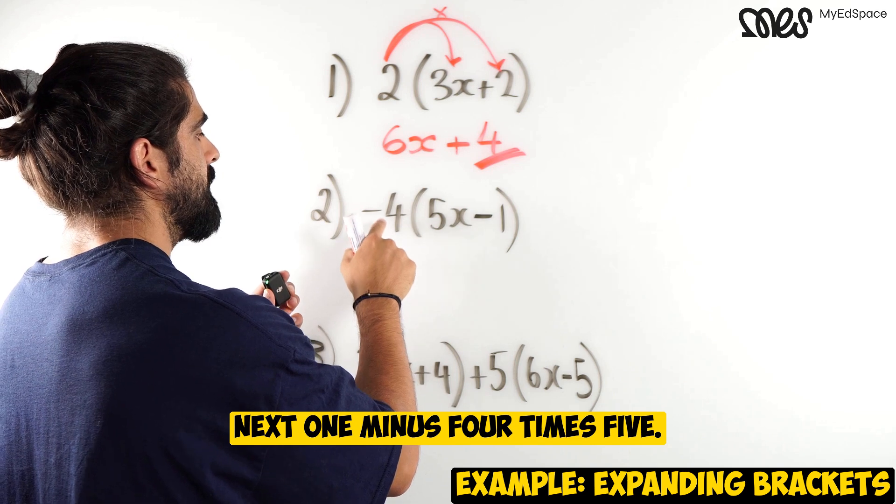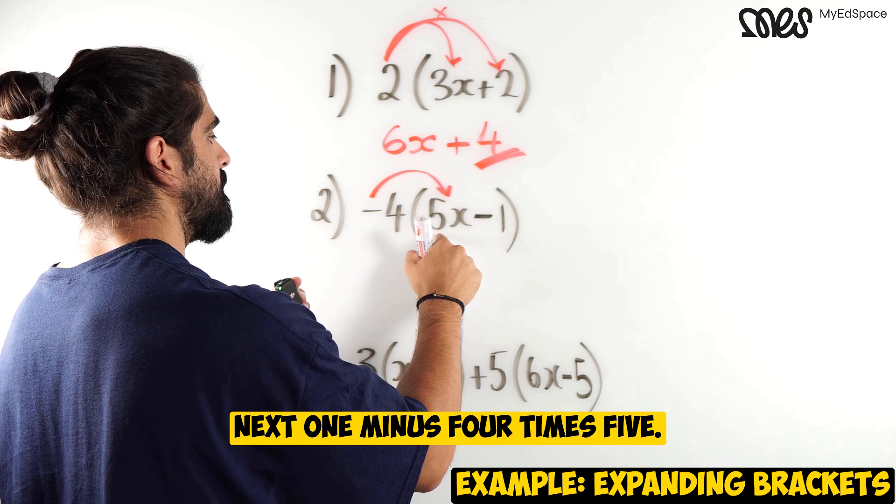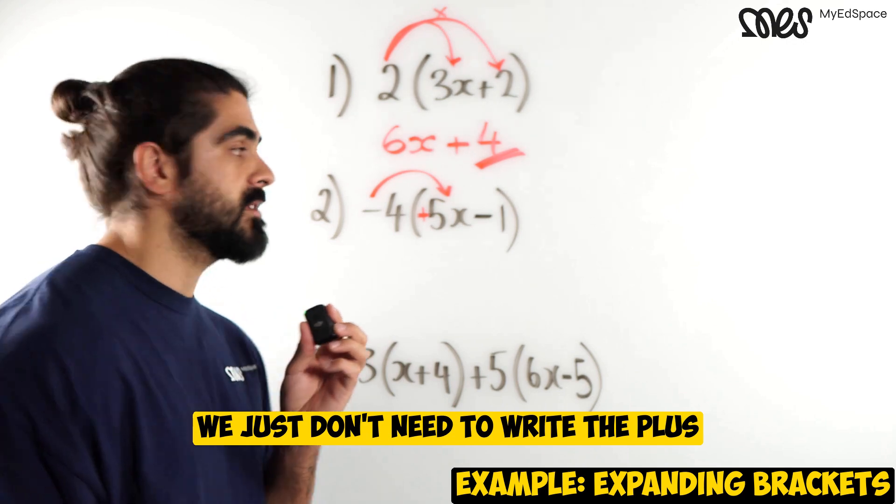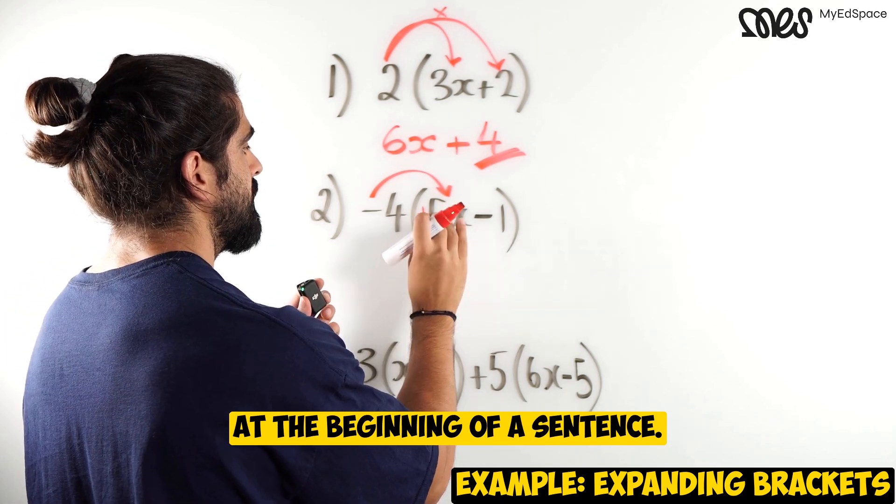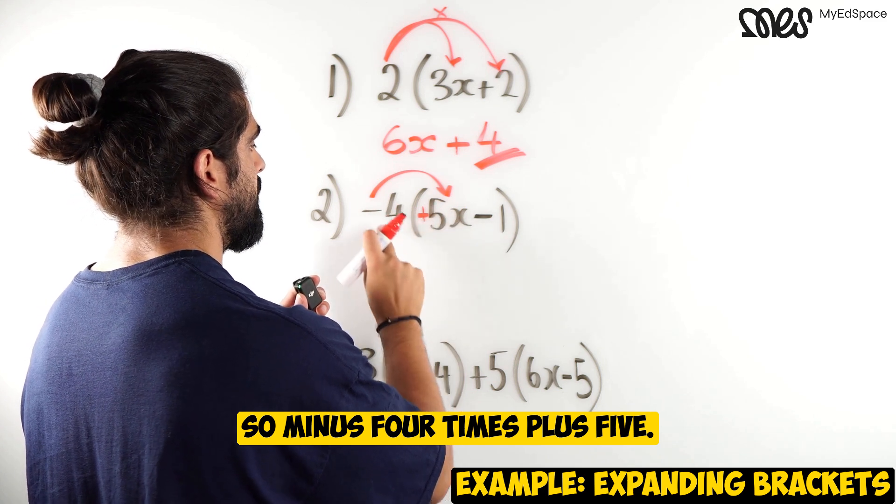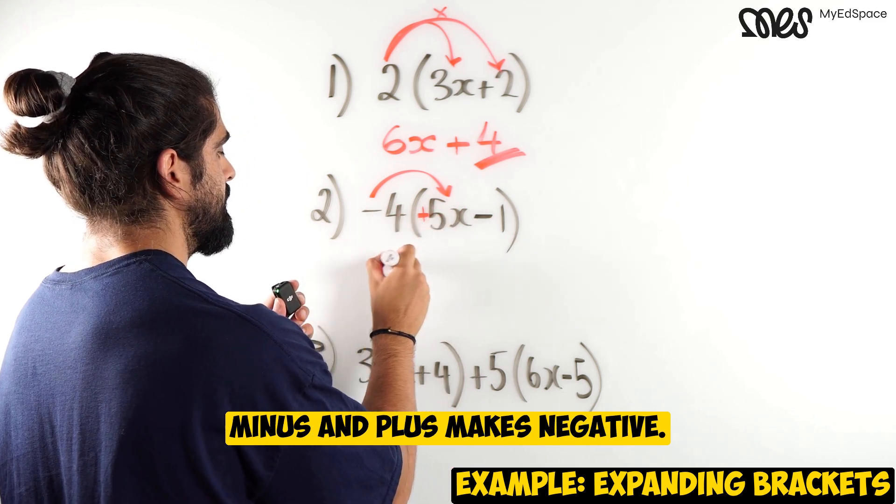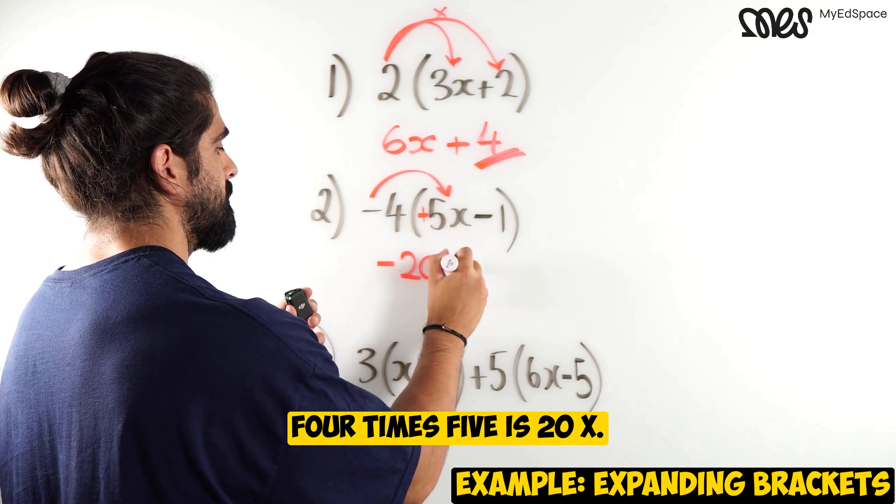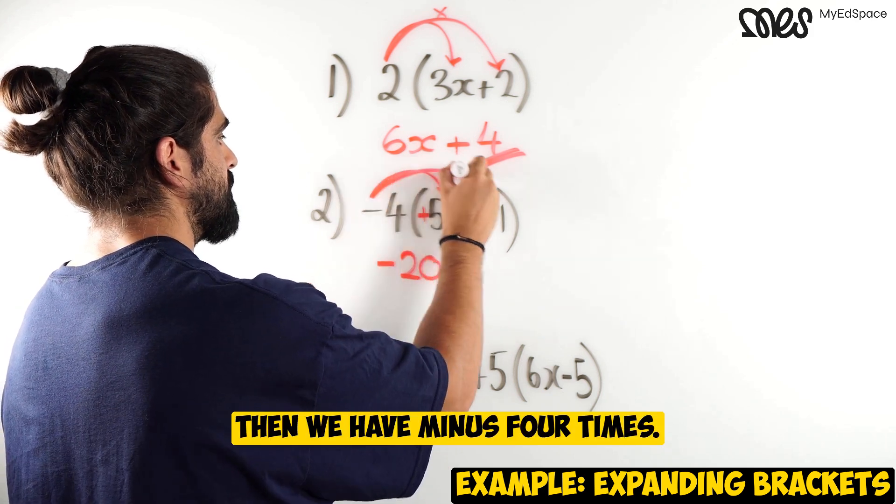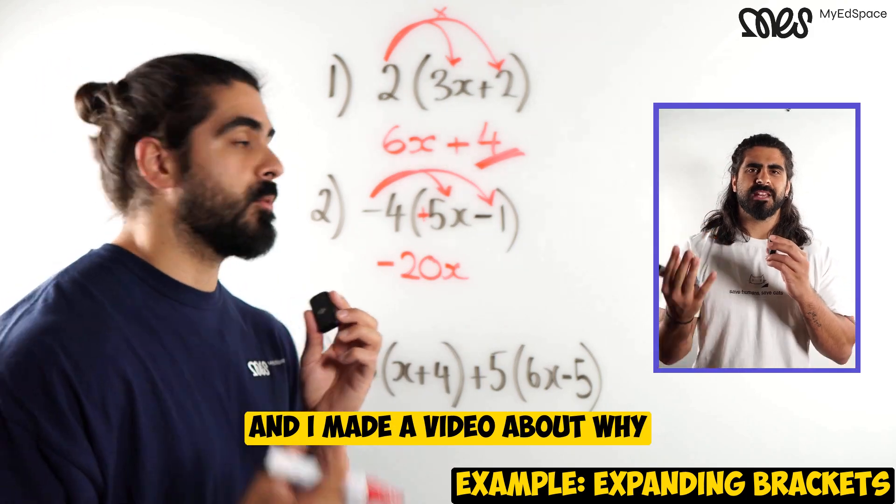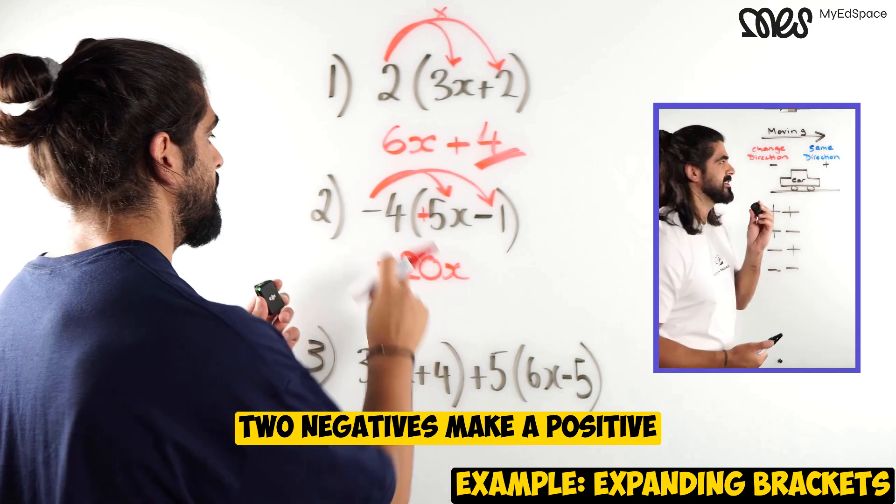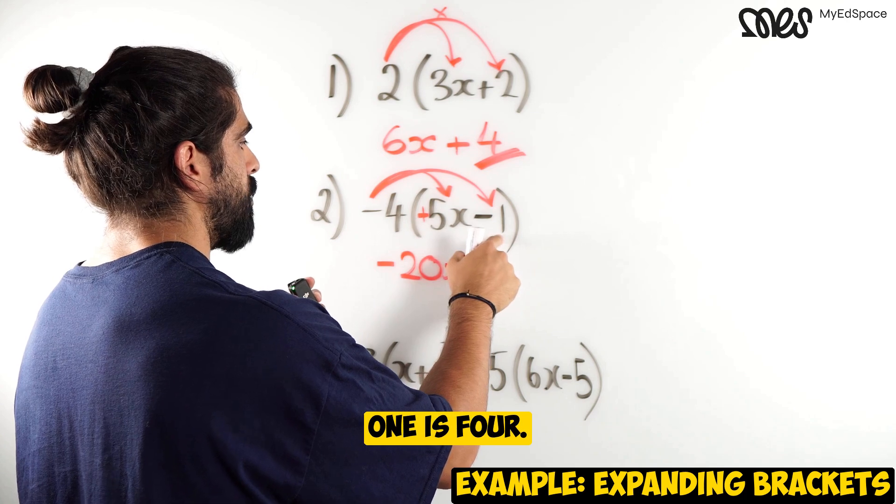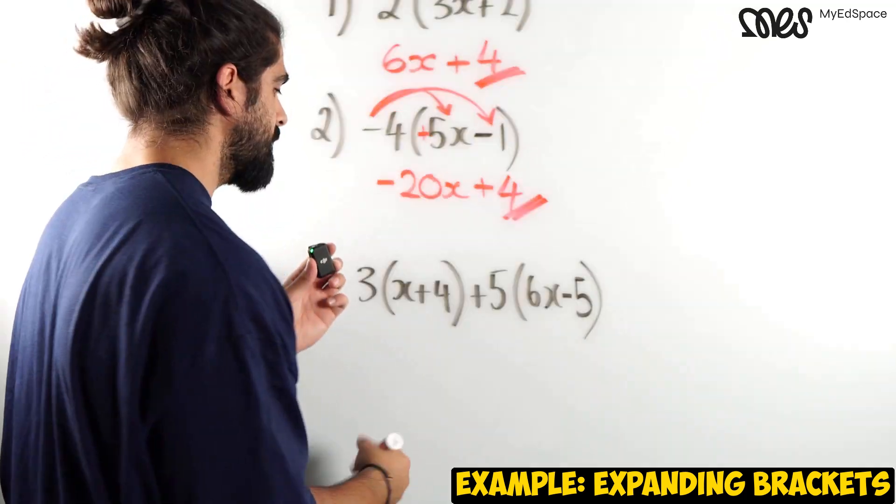Next one, minus 4 times 5x. Now be careful, this is a positive 5x. We just don't need to write the plus at the beginning of a sentence. So minus 4 times plus 5, minus and plus makes negative. 4 times 5 is 20x. Then we have minus 4 times minus 1. And I made a video about why 2 negatives make a positive. Minus and minus makes positive. 4 times 1 is 4.